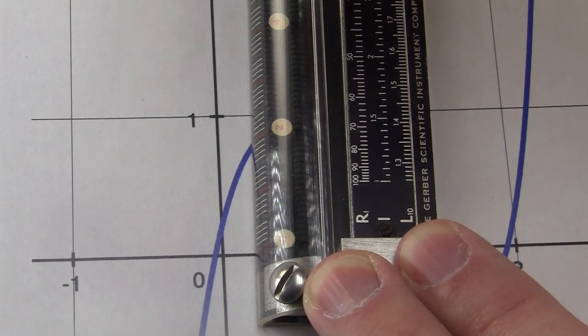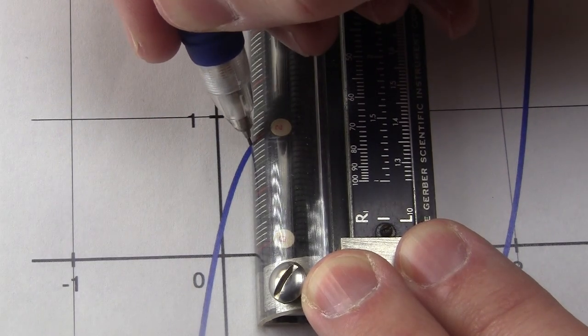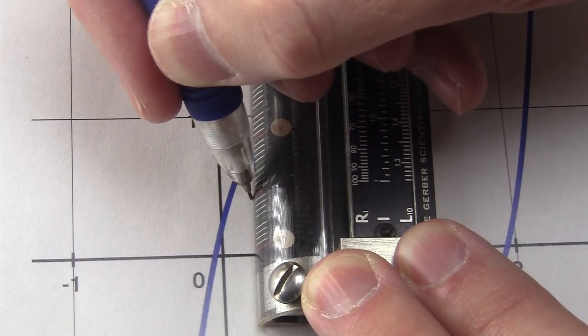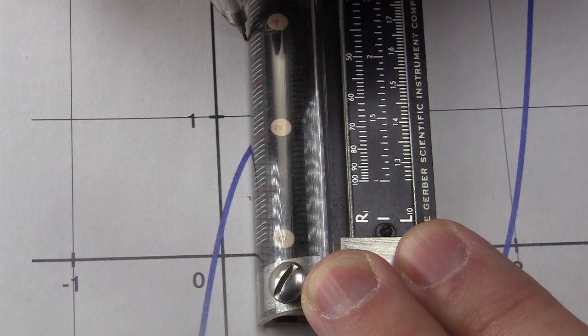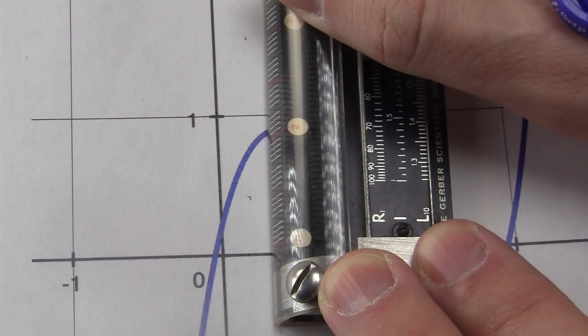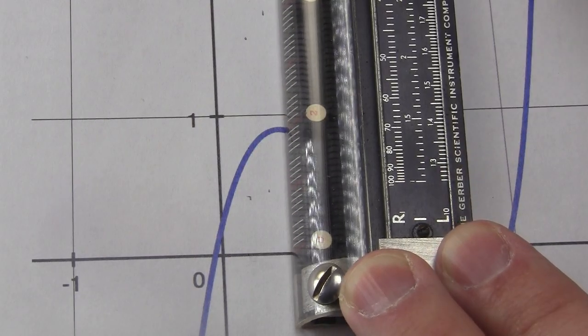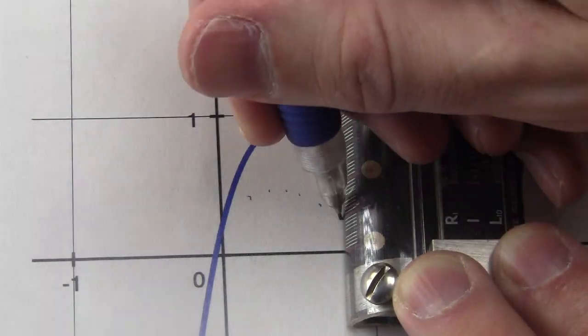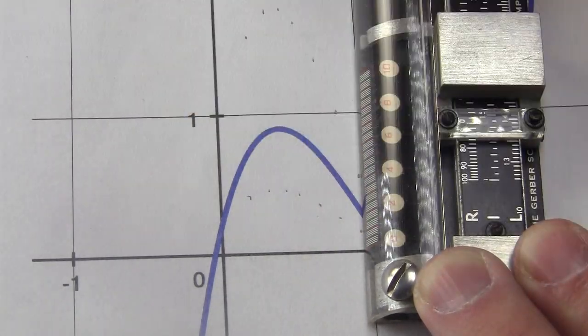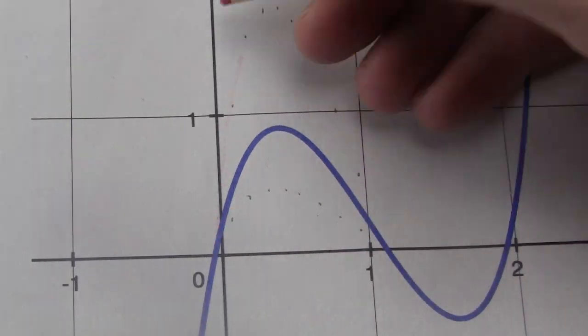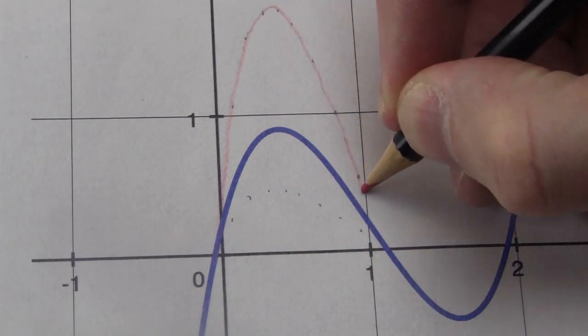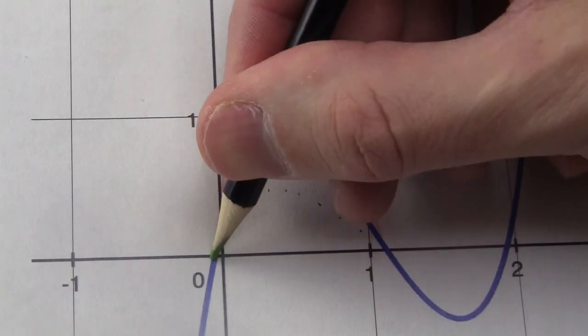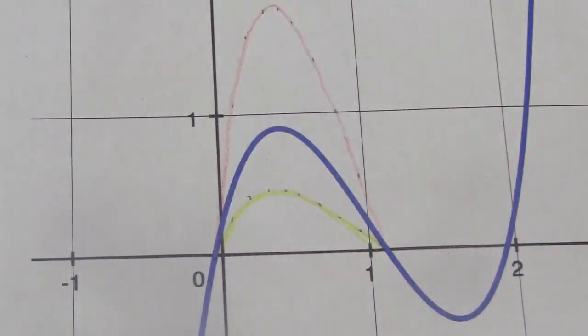And then half of that will be wherever the one is, and two times that will be wherever the four is. So I'm going to mark off the point where the one is and the point where the four is. Now you just do this for as many points as you like. Connect the dots. So I've got one curve that's a half of the original and one curve that's two times the original.